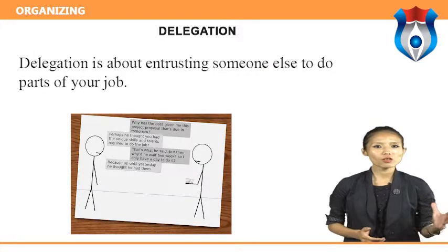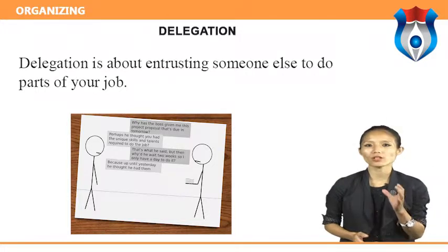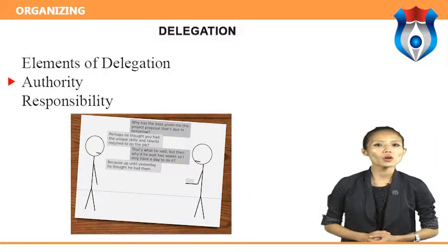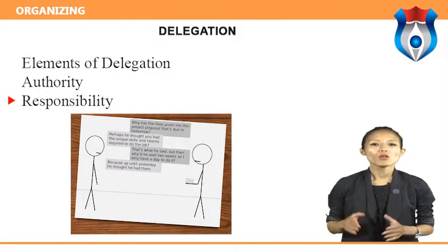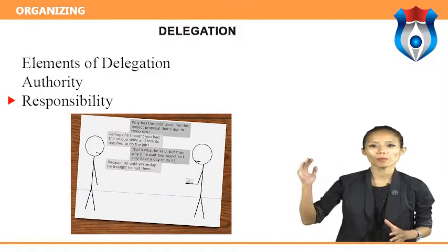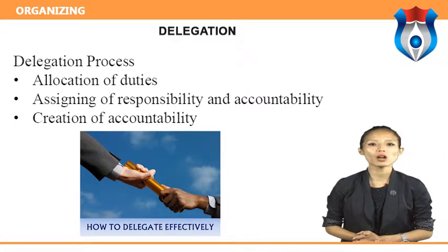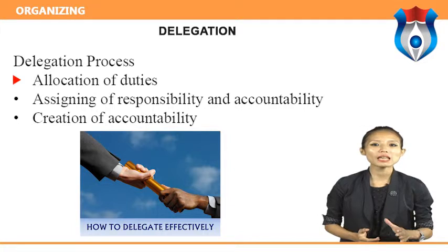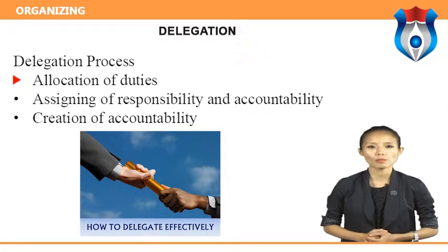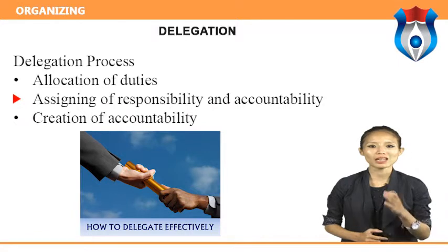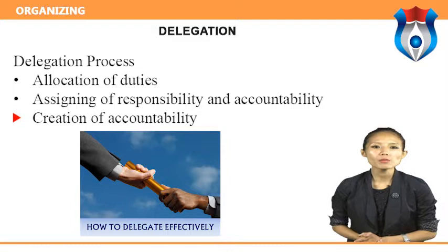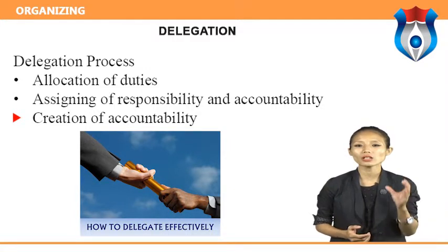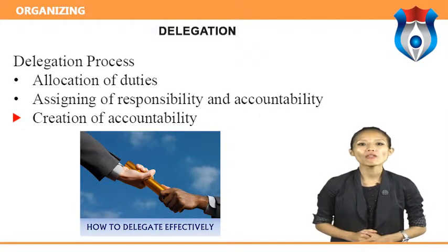Delegation is about entrusting someone else to do parts of your job. Elements of delegation include authority — the right to give commands, orders, and get things done — and responsibility, which flows from bottom to top. The delegation process involves: allocation of duties, where the delegator defines tasks for the subordinate; assigning of responsibility and accountability; and creation of accountability, which is the obligation of the individual to carry out duties as per the standards of performance.